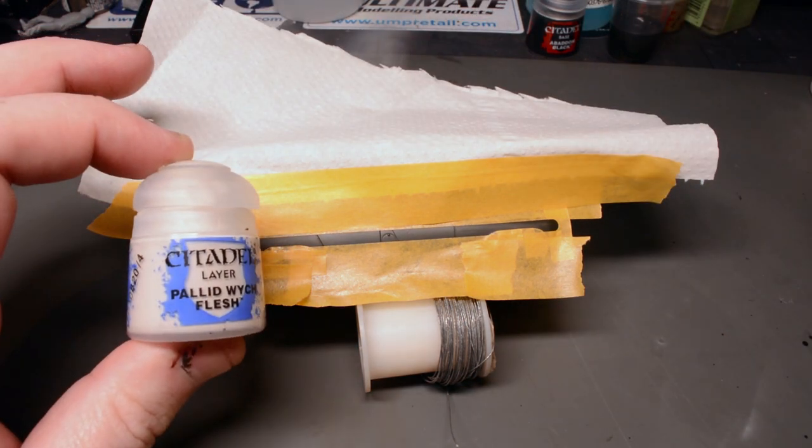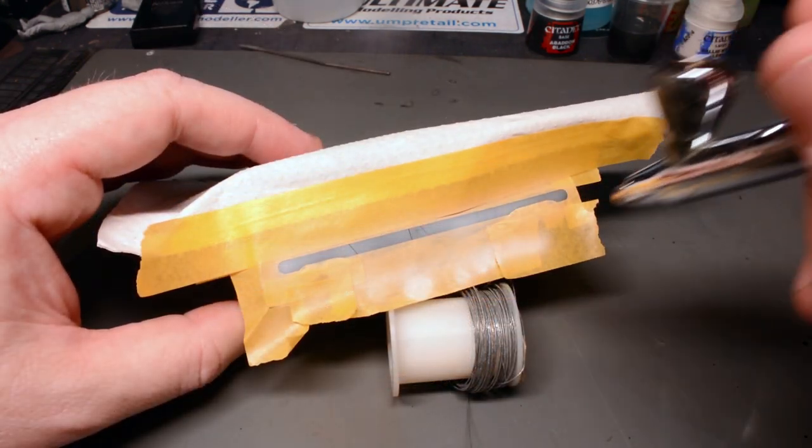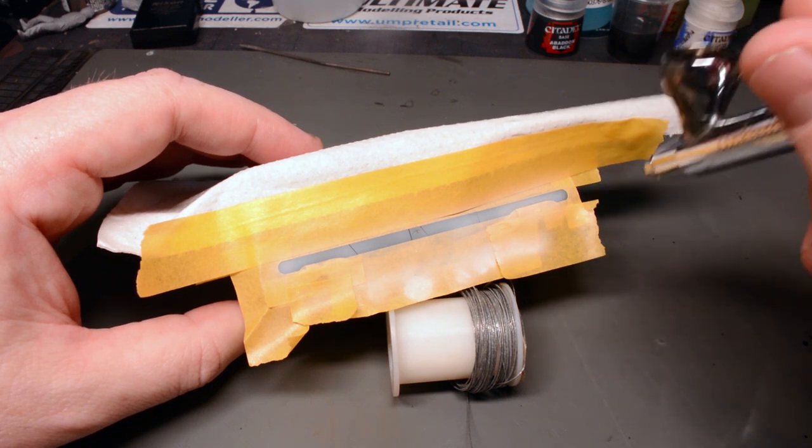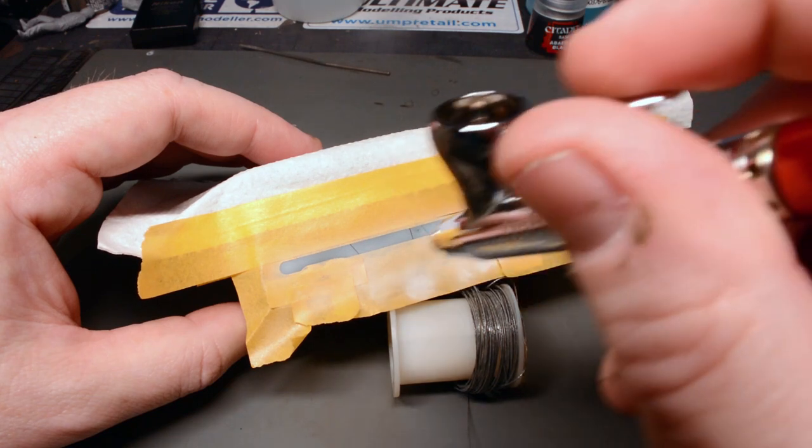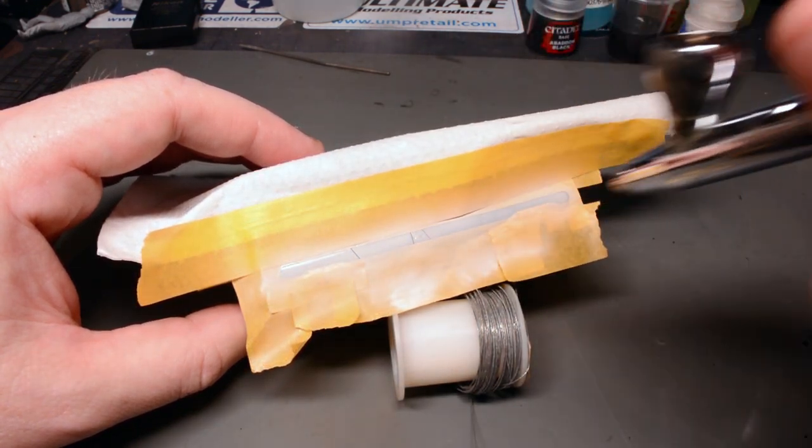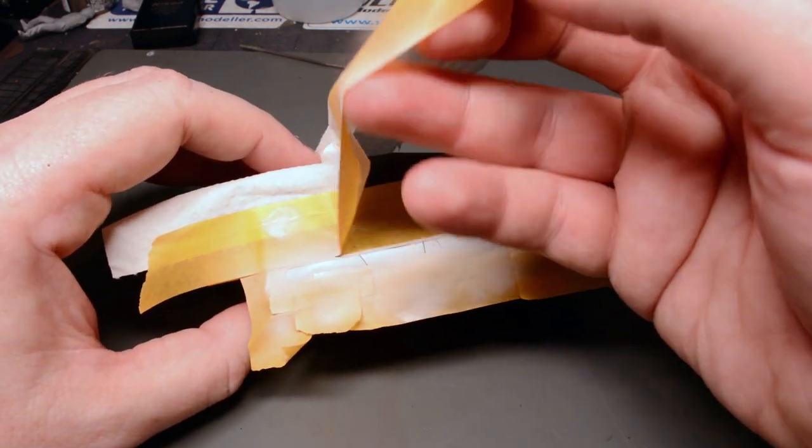For the white I used Citadel's Pallid Witch Flesh which is a bit of an off white and wouldn't be quite so stark against the dark green of the vehicle. Because of the shape of the UAZ I knew I was going to get some paint going on under the tape but this could be fixed with a brush later on so I concentrated on getting good coverage before whizzing the masking tape off to see what the finished effect looked like.